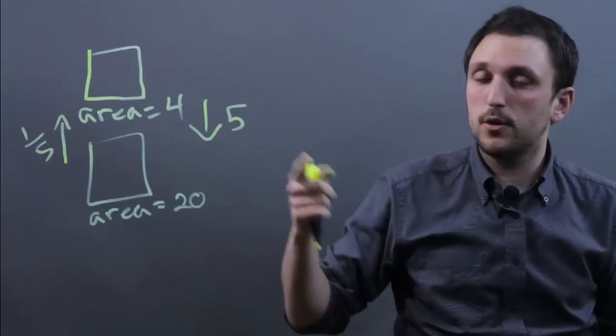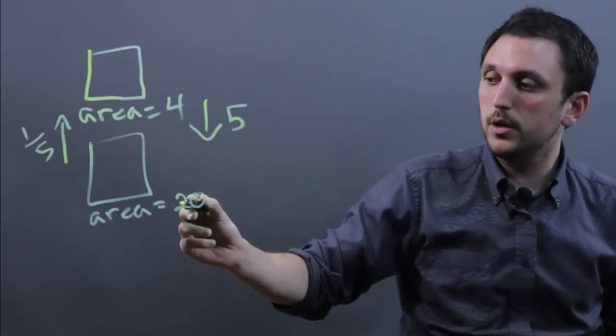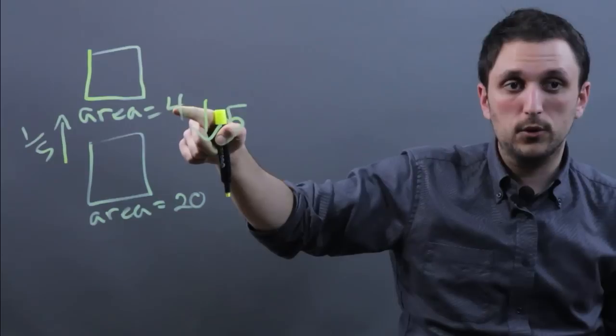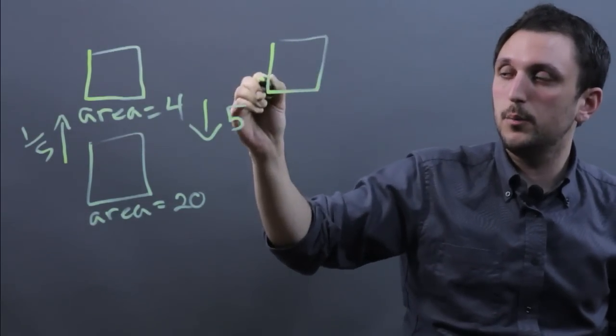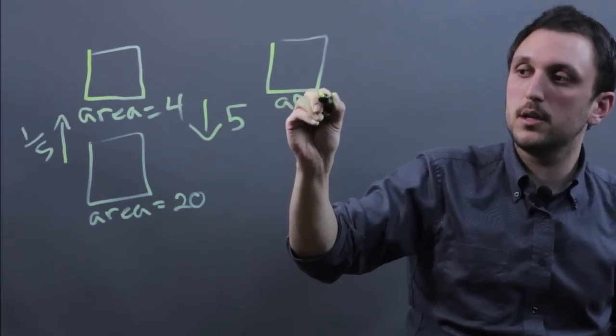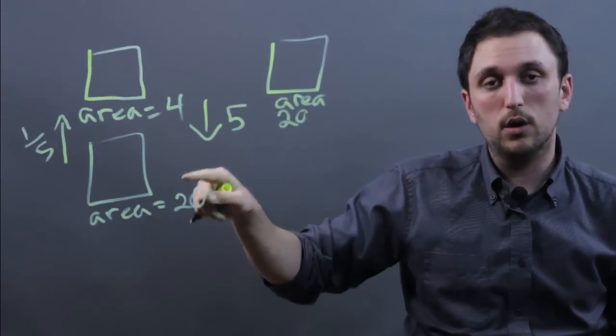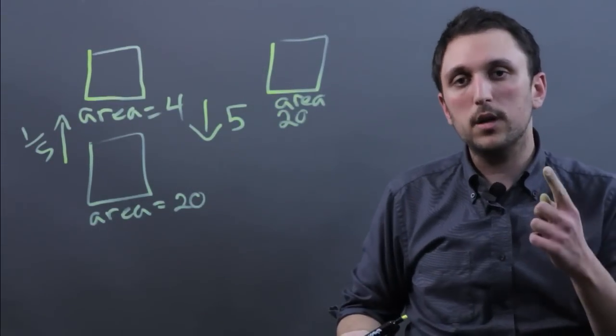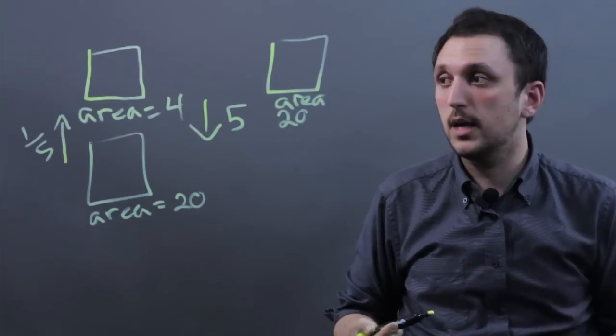So the way we would revert it back to the original is if this is our original, we would multiply this by 5. So we would make this box bigger and we call this area 20. And that would make the scale factor 1 or original. So remember that 1 is the original. Anything less than 1 is scaled down. Anything greater than 1 is scaled up.